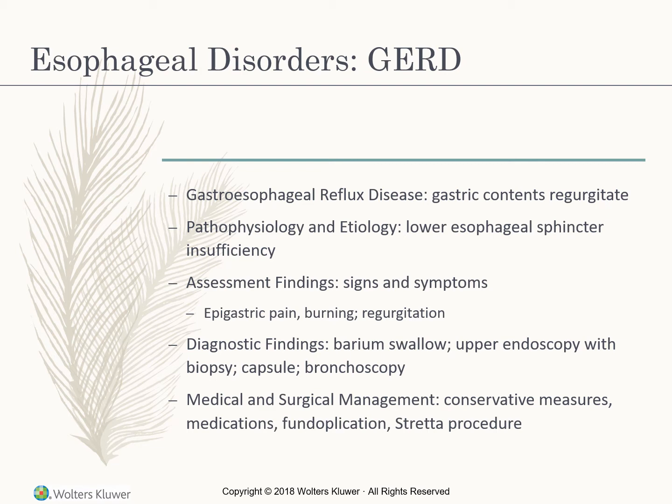Medications include antacids, proton pump inhibitors, and antihistamines, which all decrease acid production. Make sure the patient stays upright for at least an hour after eating, and raise the head of the bed at night to prevent regurgitation and aspiration. Airway is the priority. Surgical treatment includes fundoplication, where the lower esophageal sphincter is wrapped around the gastric fundus and sutured into place. Another method is dilation for patients with esophageal strictures. The Stressa system uses electrodes to create tiny lesions on the lower esophageal sphincter; as they heal, they tighten, increasing muscle mass and preventing reflux.